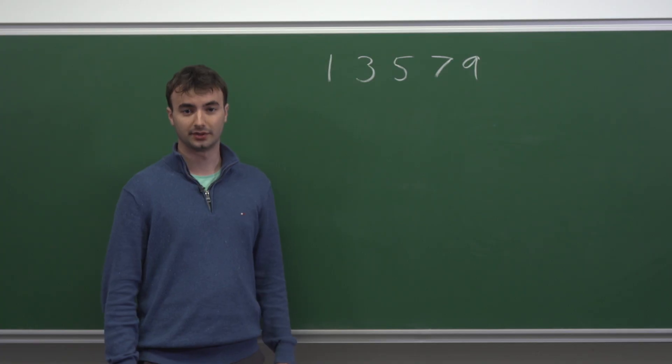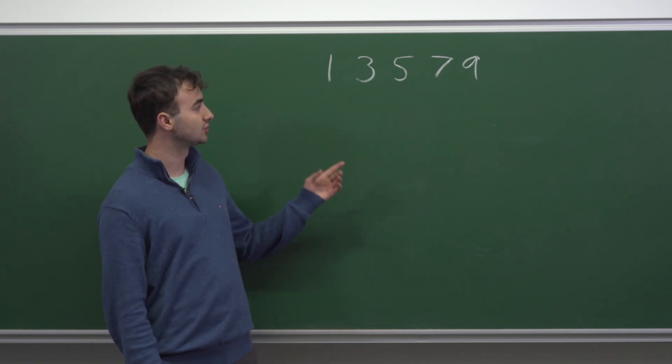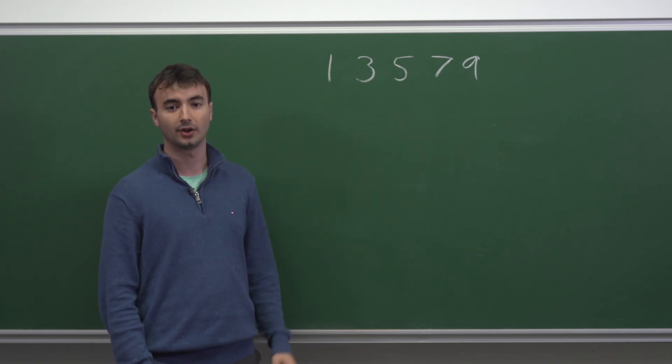When we're working with divisibility by three, you might remember there's a rule for this. A number is divisible by three is equivalent to the sum of the digits of this number being divisible by three. So it suffices to just look at which digits can make up our number, and then we can think about how to arrange those digits.